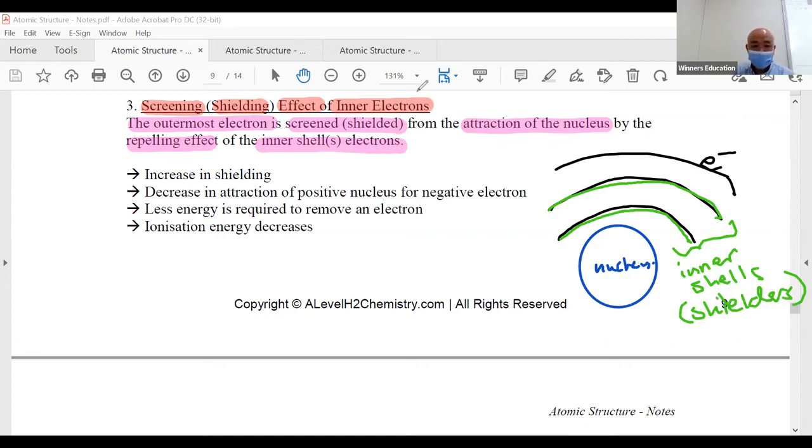Why? It's like Juliet and Romeo attract, but suddenly you've got two walls separating them. It's like having a north and south pole of a magnet with a book in the middle - they won't attract anymore. Increase in shielding means decrease in attraction of positive nucleus for the negative electron. Romeo and Juliet cannot attract. Concluding statement: less energy is required to remove the electron, so ionization energy decreases.